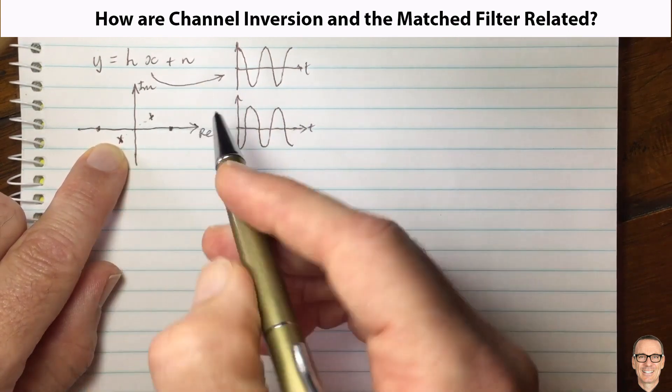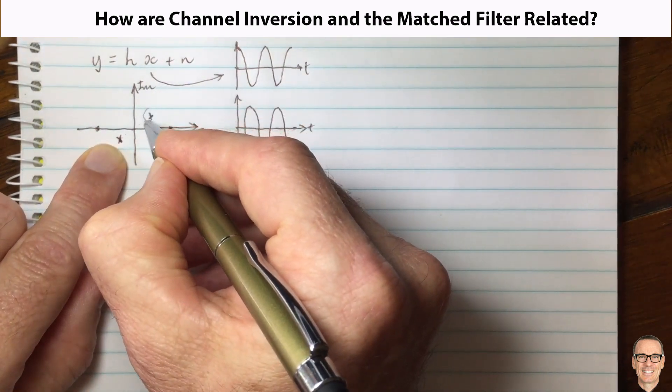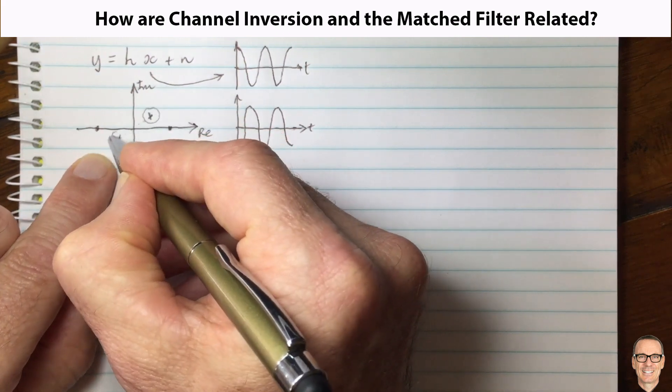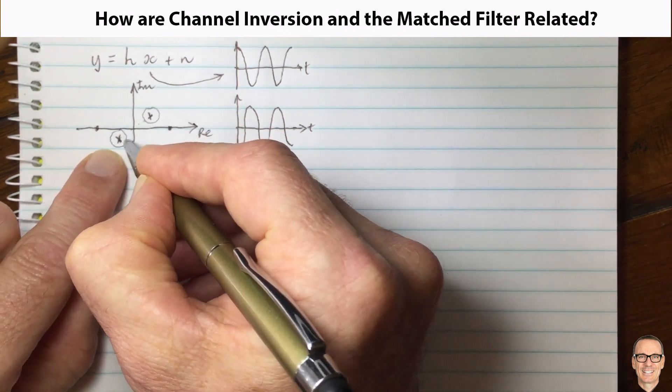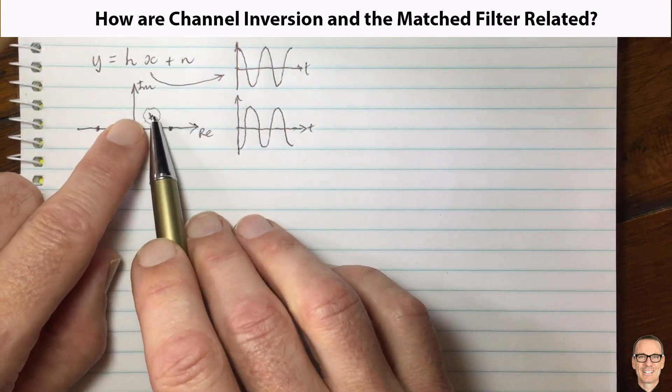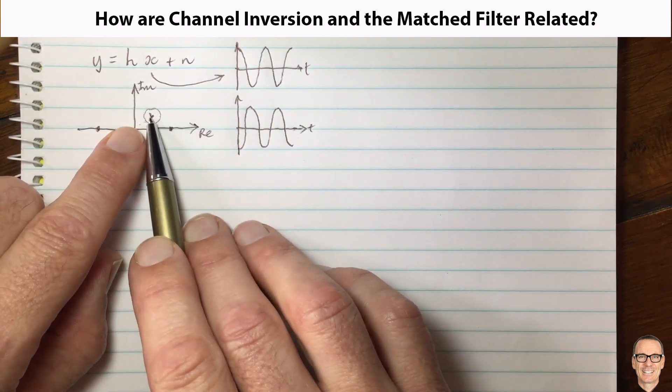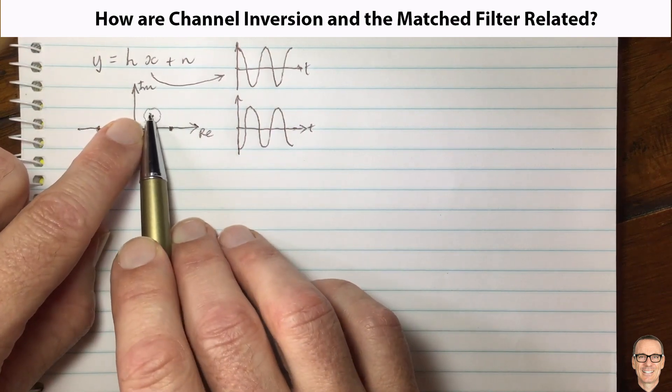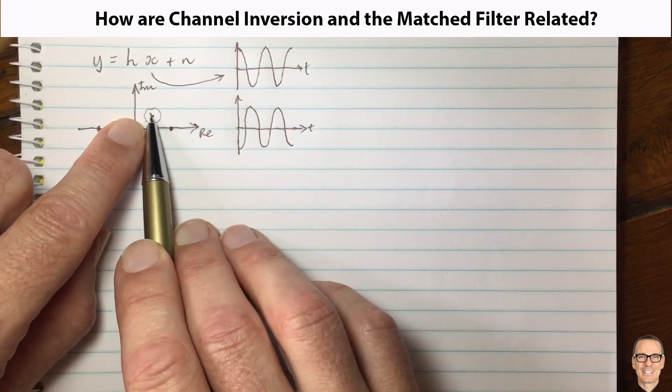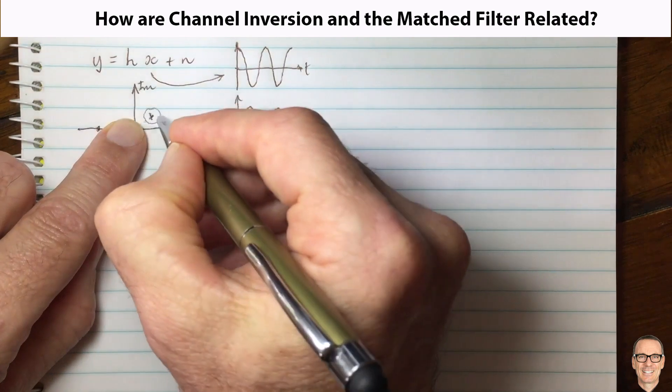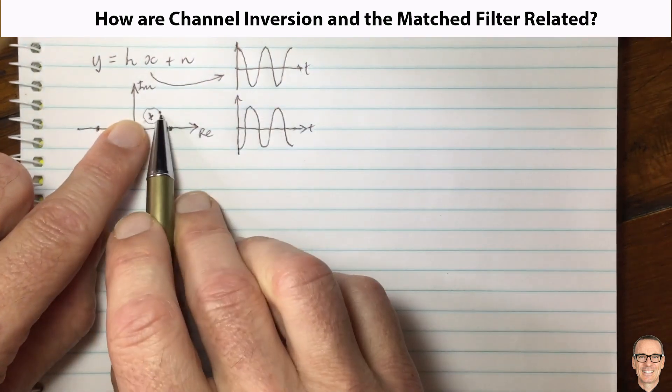And then there's noise added, so I'm going to draw a circle around this which indicates a Gaussian noise cloud around there. It doesn't have to be exactly on the circle, of course it's a Gaussian, but I'm just drawing the circle to indicate that the noise is going to mean that this signal here is received not exactly at the x but somewhere else. So it might be that the noise made it be received over here.